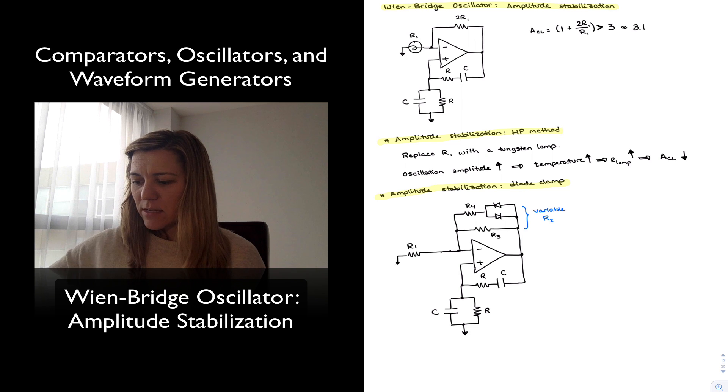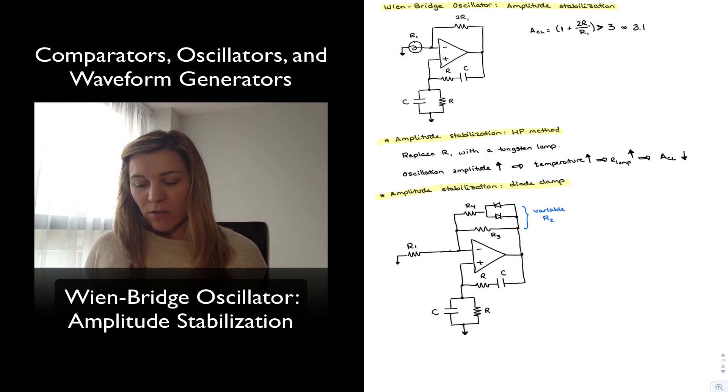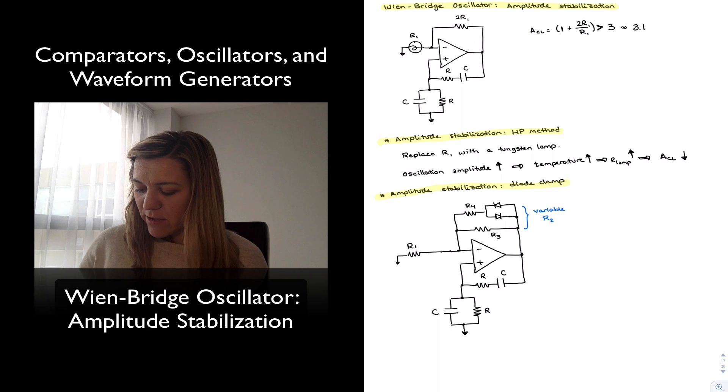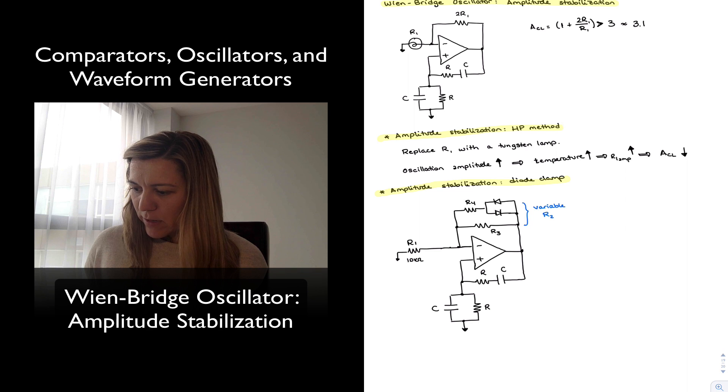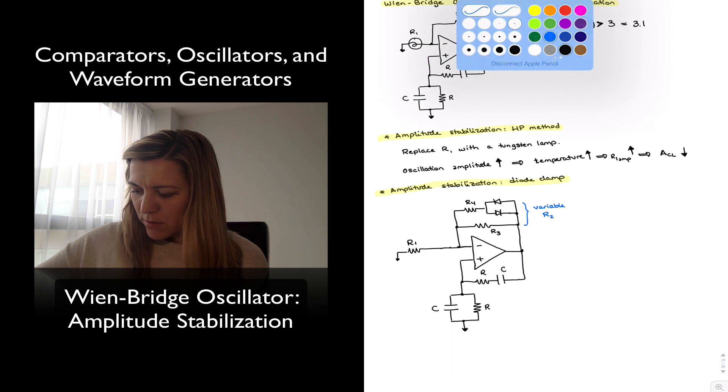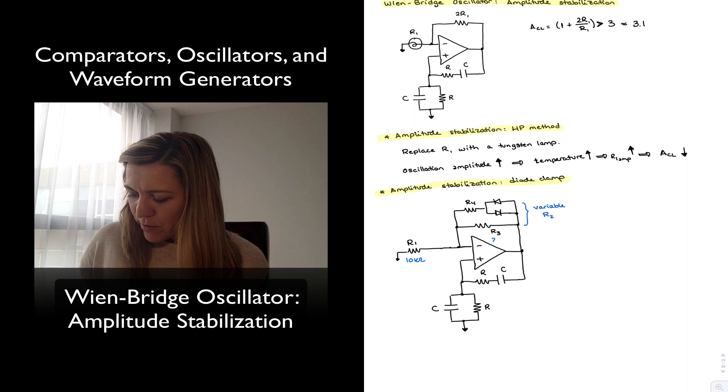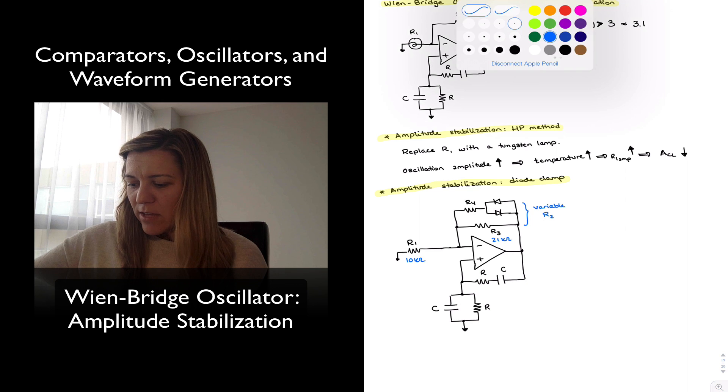And the idea is that while the oscillations are small, the diodes are going to be open. None of them is going to be forward biased. And so my overall, my effective value for the feedback resistor is equal to R3. So let's imagine if I had, you know, 10 kilo ohms and 21 kilo ohms, for example. So my R1 could be 10 kilo ohms, my R3 could be 21 kilo ohms, something slightly greater than 20, so that I have an effective gain greater than 3.